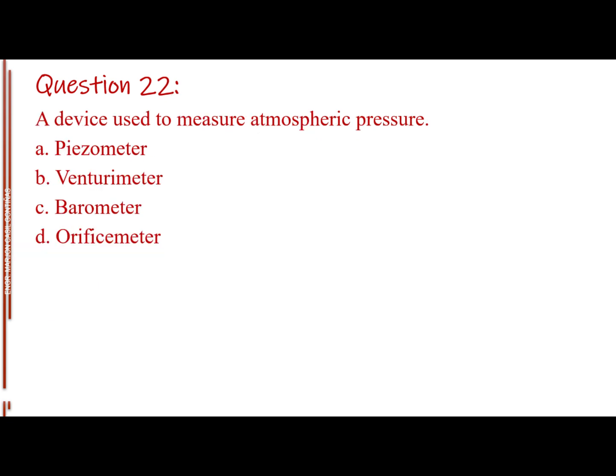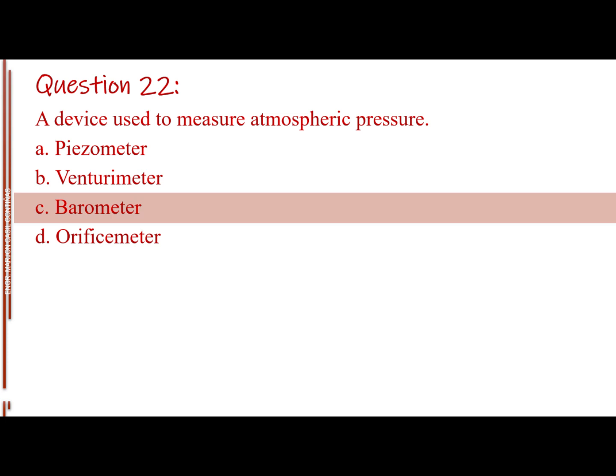Question number 22. A device used to measure atmospheric pressure. Letter A, piezometer. Letter B, venturi meter. Letter C, barometer. Letter D, orifice meter. The answer is Letter C, barometer.